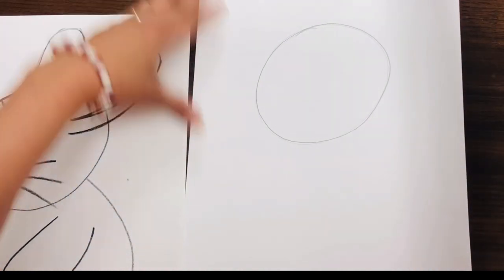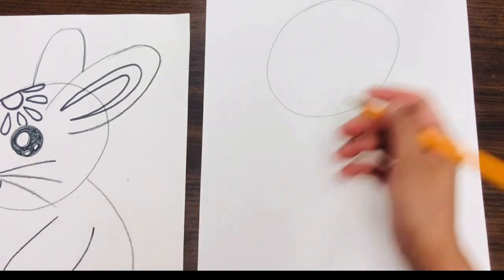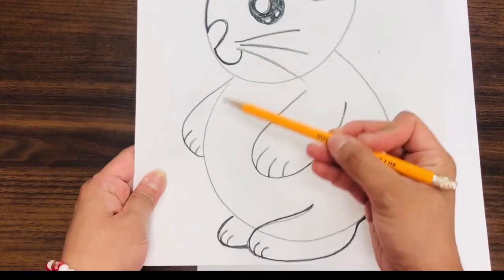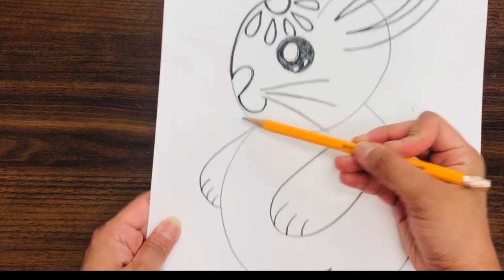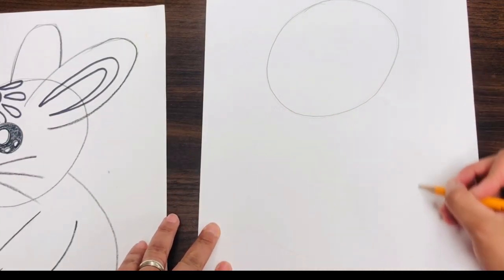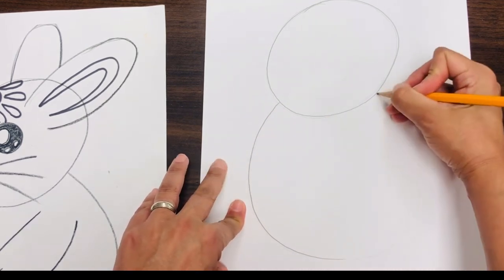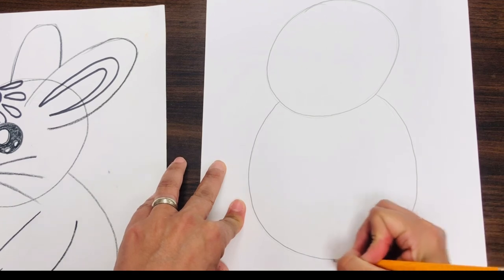For the belly, we are going to make a circle kind of hiding a little bit under the head shape, so it kind of looks like a U. Make sure that it's nice and fluffy. Rabbits are very fluffy.